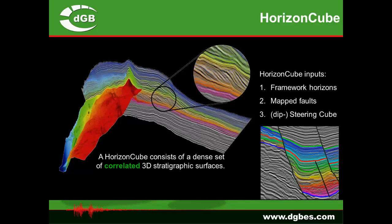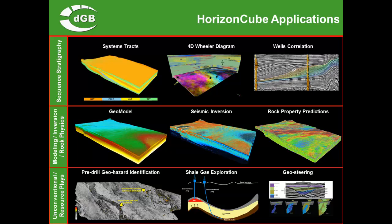The solution is constrained by at least two framework horizons — a top and a bottom — but there can be more to get a better constraint on your data. If there are faults in the data, you have to map these upfront. Once you have calculated the HorizonCube, there's a whole range of different applications available that allow you to extract more geologic information from your seismic data.